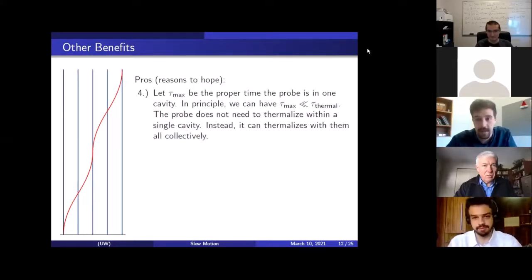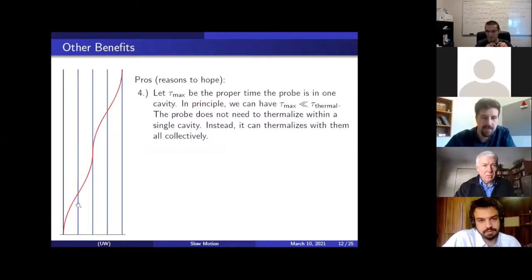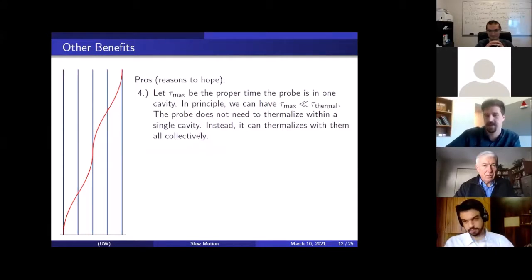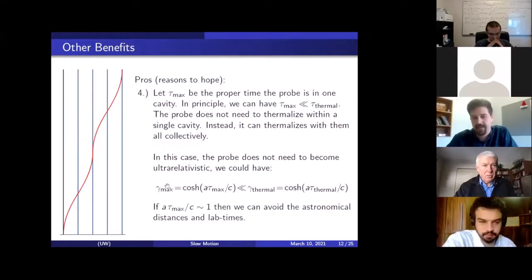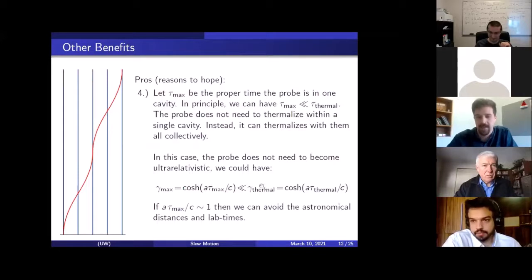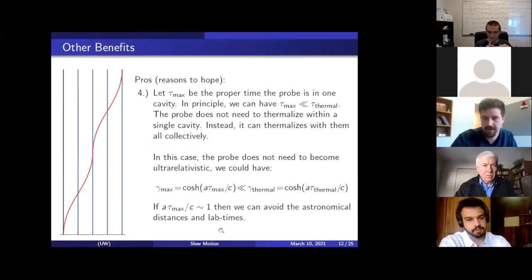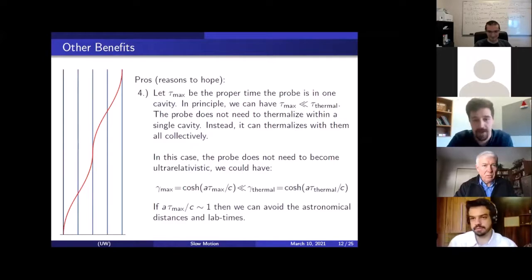So a cell is, I didn't mention, the cell is two cavities side by side but this is one cell and then there's a second cell where we accelerate and decelerate. When you cross one of the cells you just apply some CPTP map to the state to get the next state. And what causes this is the cavity walls shield the probe from the wider environment. So this is again a very pragmatic useful tool and I'll talk about it more in a second. The fourth reason this is a good thing, you might think this is a good thing, is that it lets us get around that dilemma that we were talking about earlier. So let tau max be the proper time that the probe is in one of the cavities. In principle we can have this less than the thermalization time. Which means that we're not assuming that the probe thermalizes within a single cavity. Instead what we're thinking is that it interacts with lots of cavities and by this long process comes to thermalize with them all collectively.